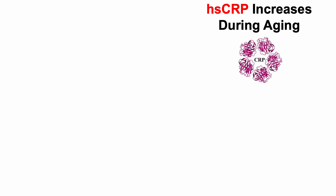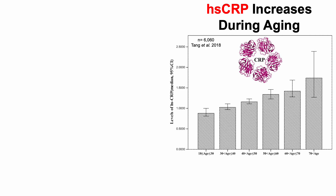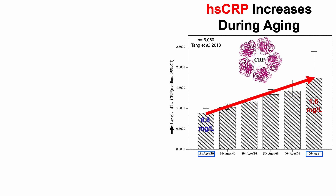High-sensitivity C-reactive protein, or HSCRP, increases during aging, and that's what we can see here, with levels of CRP on the y-axis plotted against age, starting with 18-year-olds on the left all the way up through people who are older than 70 on the right. In youth, average CRP levels are 0.8 mg per liter, and then we can see the age-related increase such that people who are older than 70 have average CRP values that are double that — 1.6 mg per liter.